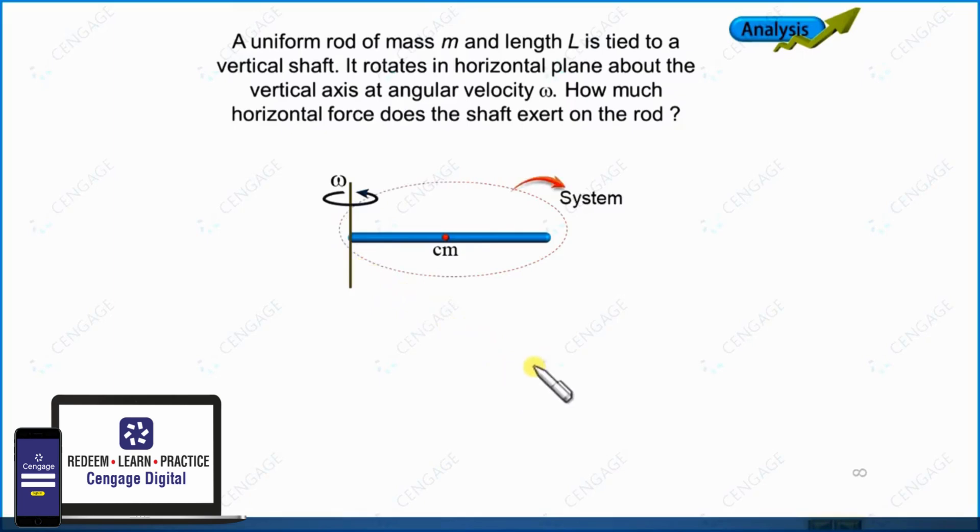Let us find what are the external forces acting on the system. As we have considered this as a gravity-free space, we don't need to bother about the weight of the rod. The external force only will be the force exerted by the shaft on the rod.